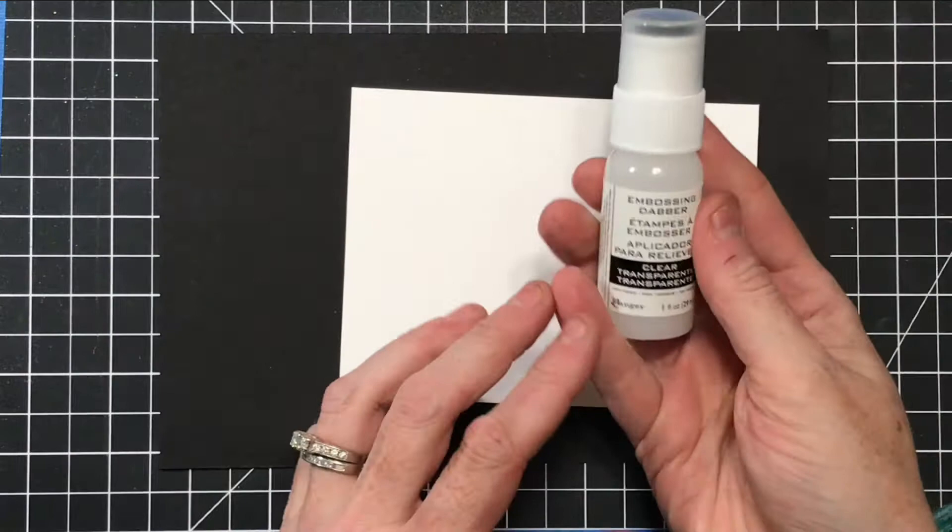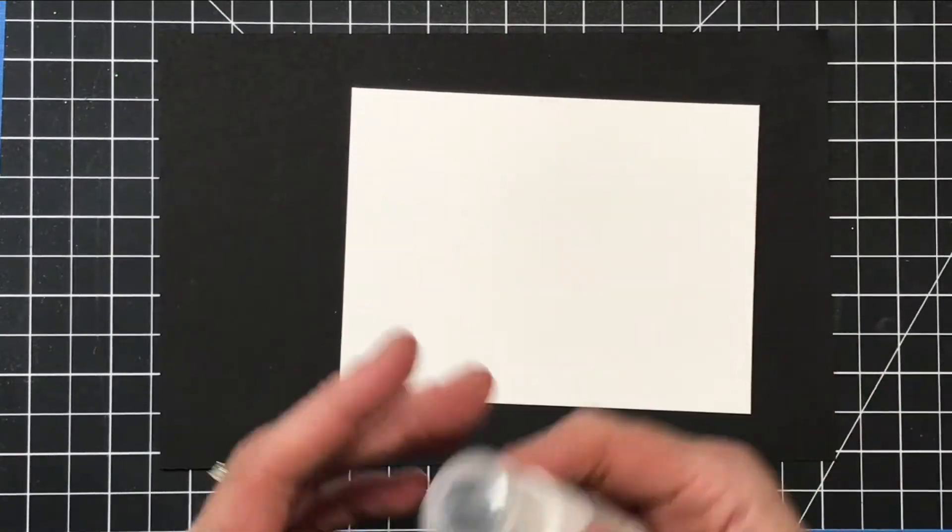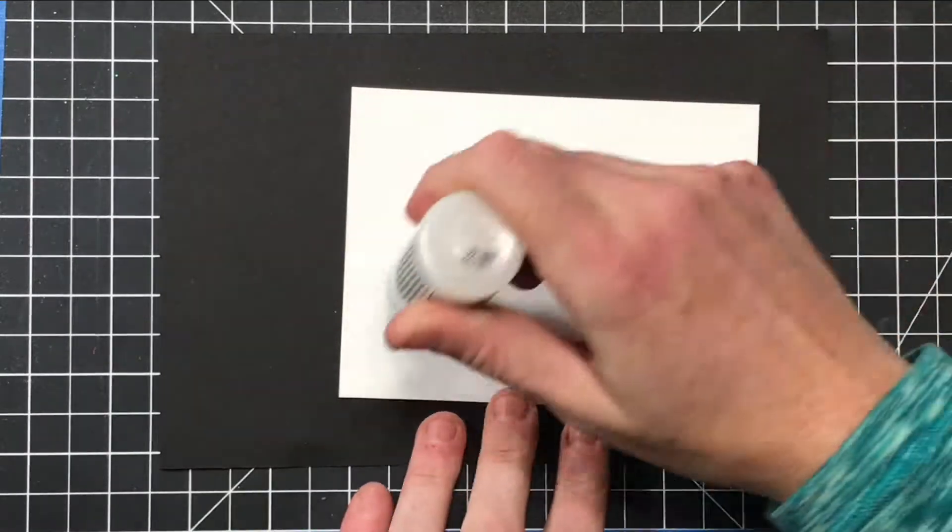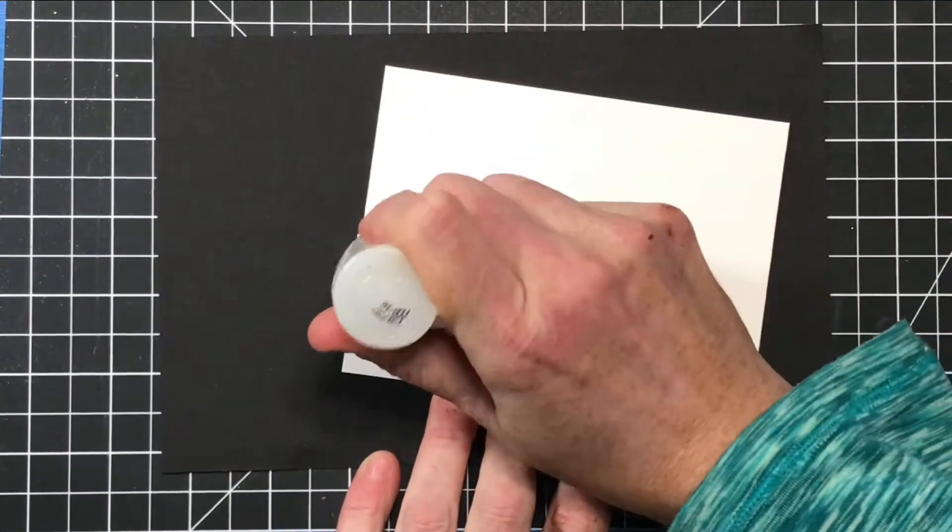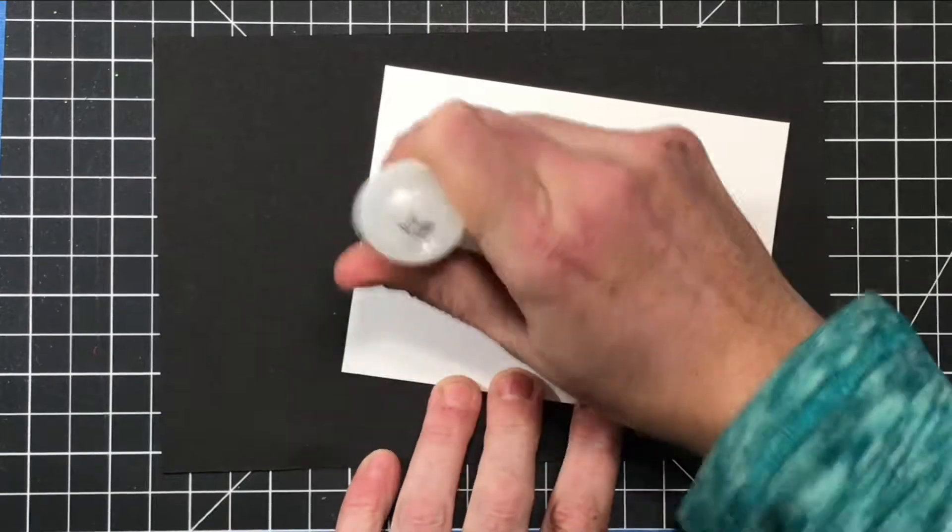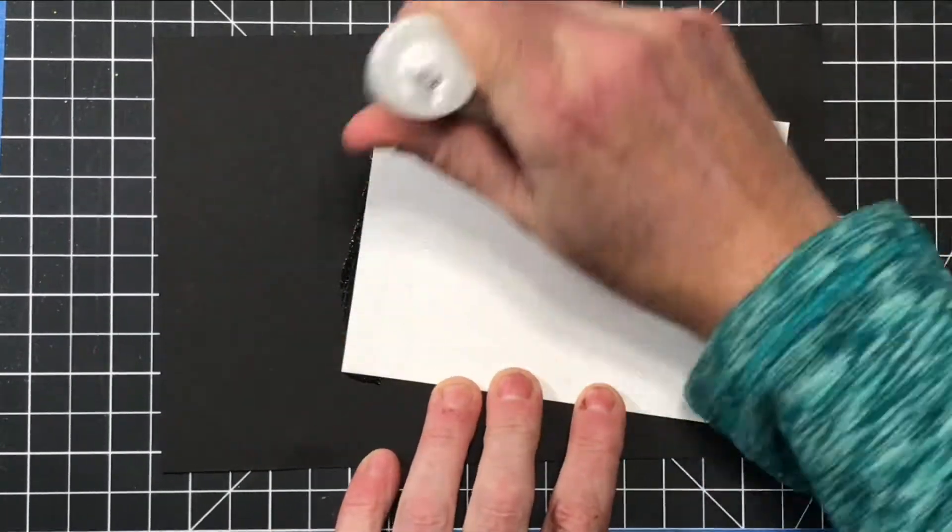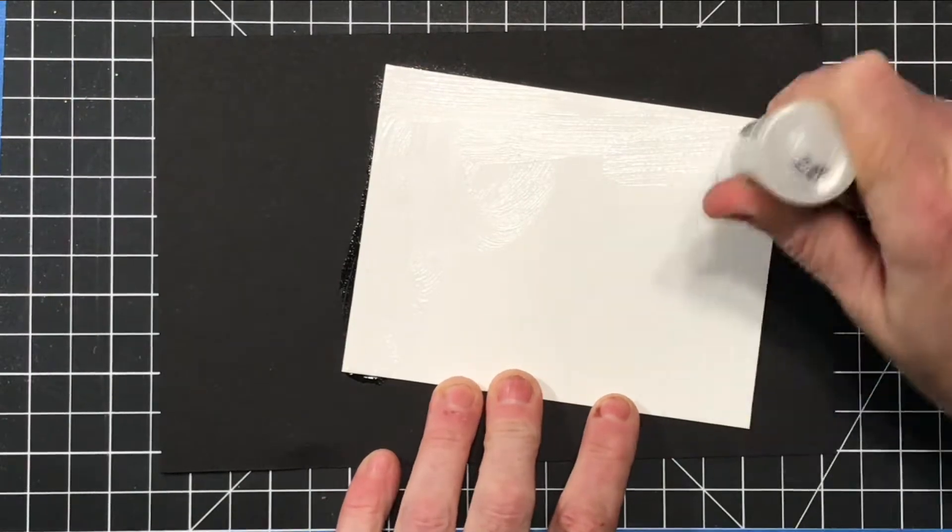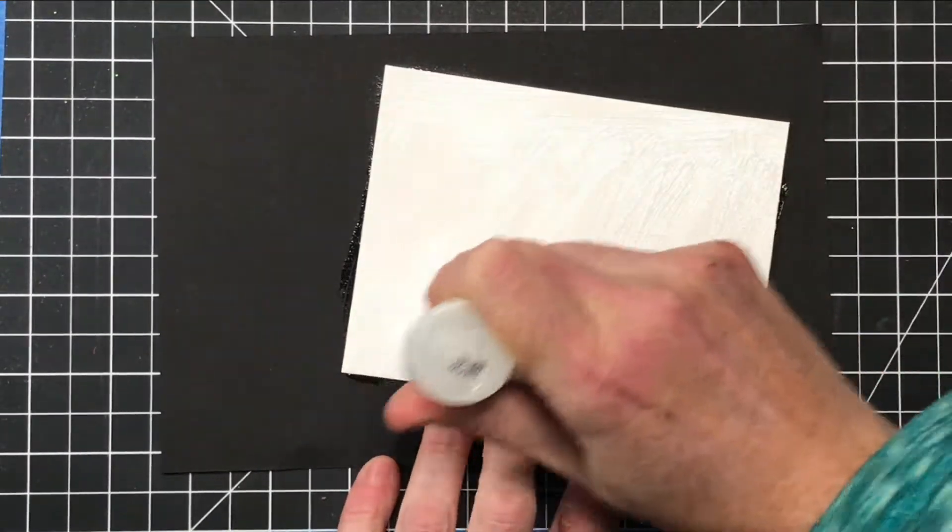First we're going to use the Ranger embossing dauber to cover the entire surface of this cardstock. You can also use a Versamark ink pad if you don't have the dauber at home and it will work very similarly. Next we're going to add some